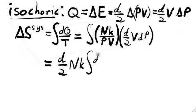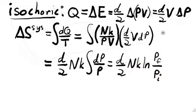Now we just have to pull out all of our constants, and we get an integral of dP over P. This integral is easily evaluated to yield a formula for the change in entropy in an isochoric process.